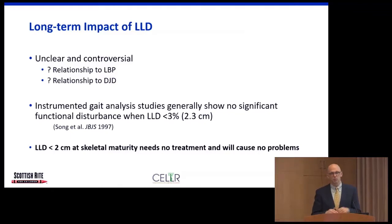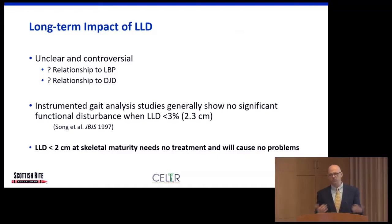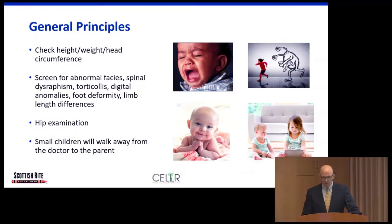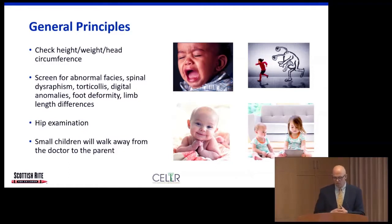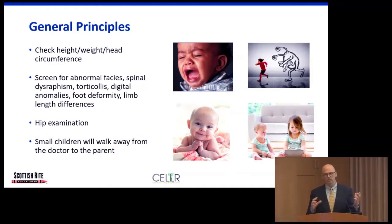When you see a skeletally mature patient with just a subtle limb length difference and no other underlying problems, it's easy to reassure them. General principles of evaluating the patient are important, particularly when the patient is younger. A broad overview can point you toward the etiology of the limb length difference.